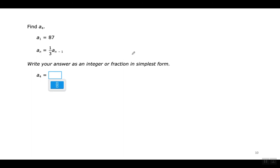Remember that when you multiply by 1 over 3, that means the same thing as dividing by 3. When you have a 1 on the top, it's the same as dividing by the number on the bottom. Multiplicar por 1 sobre 3 es lo mismo que dividir por 3.